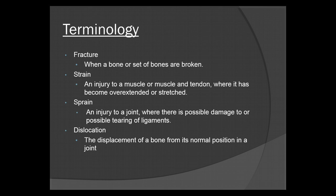Terminology: A fracture is when a bone or set of bones are broken. A strain is an injury to a muscle or muscle and tendon where it has become overextended or stretched. A sprain is an injury to a joint where there is possible damage to or possible tearing of ligaments. And then you have dislocation — the displacement of a bone from its normal position in a joint.